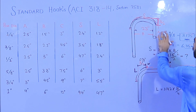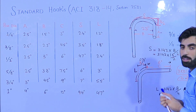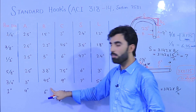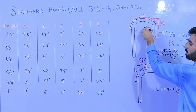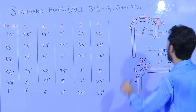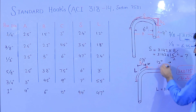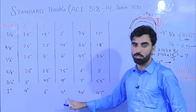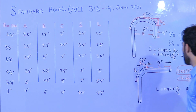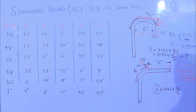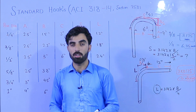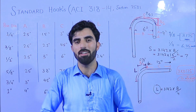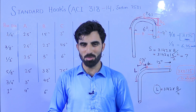For 1 inch diameter (25 mm) bar: A should be 4 inches, B should be 6 inches, C should be 12 inches, S should be 9.4 inches, and L should be 4.7 inches — as you can see this length here. This was the important video in which I discussed ACI American Concrete Institute standard hook dimensions. I hope this helps you if you are a structural designer or working on a construction site. Thanks for watching, see you in the next video. Goodbye.